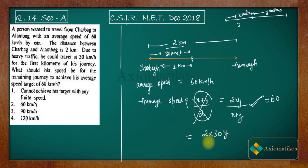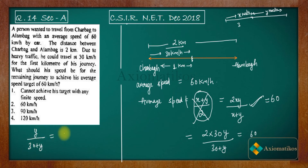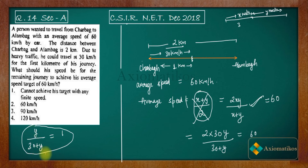Simplifying: y / (30 + y) = 1. You cannot find any finite value of y that satisfies this equation. If you try to solve it, y cancels and you end up with 30 = 0, which is impossible. Therefore, the person cannot achieve his average speed target of 60 km per hour with any finite speed for the remaining distance.